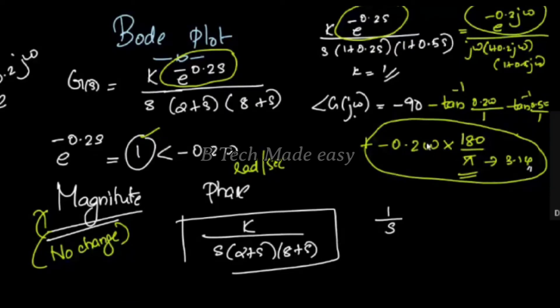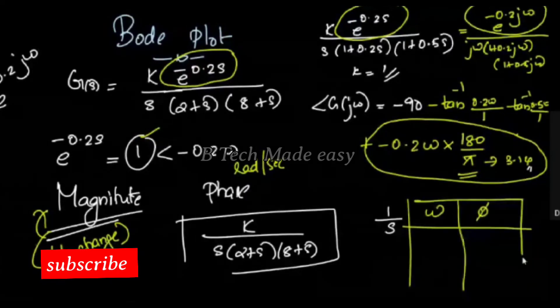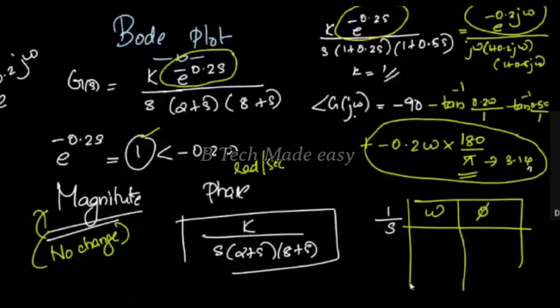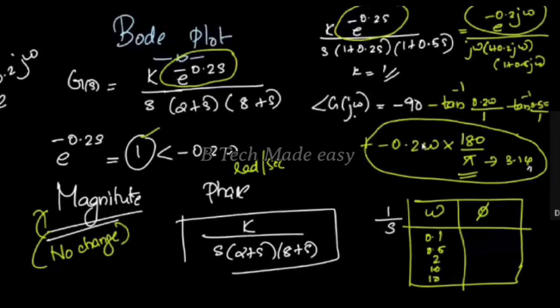For the phase of e^(−jθ), there is one angle θ. If it is used in the phase plot, we compute −0.2ω × (180/π) for the delay contribution, with π = 3.14.